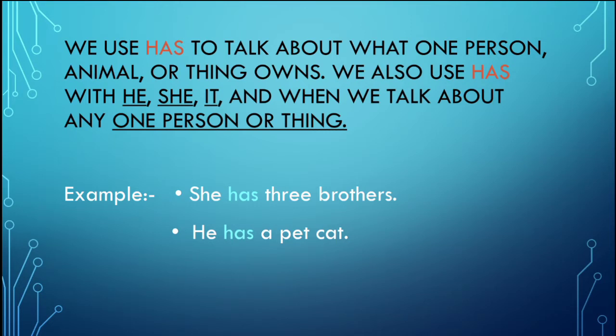When we talk about any one person or thing, we use 'has.' For example: 'She is a female student and her player is using it — she has a pet cat.' Since this is singular, we use 'has.' 'It has a pet cat' — same rule applies.